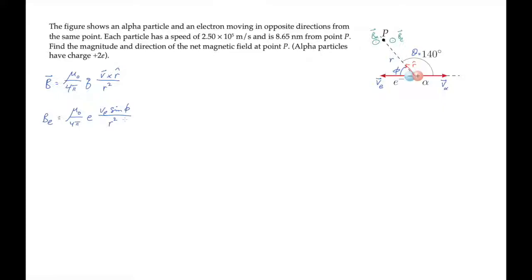When we substitute values and calculate, we find the electron produces a magnetic field with a magnitude of 3.44 times 10 to the minus fifth tesla.